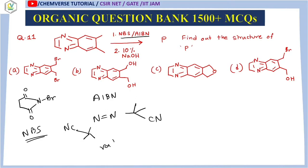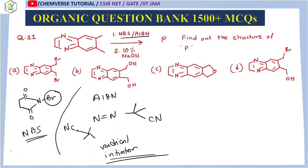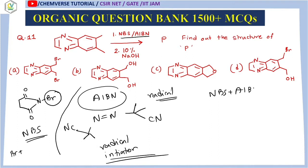AIBN is basically a radical initiator. It can form radicals and induce a radical chain reaction. So in the combination of NBS and AIBN — from the structure of NBS you know there is a bromine, which can act as a bromine source. In absence of AIBN it acts as a Br⁺ source, but since AIBN is present, you think about how the radical will be generated and how the radical-induced chain reaction will occur. This combination — NBS plus AIBN, or any other radical initiator — will specifically give bromination at the allylic or benzylic position.